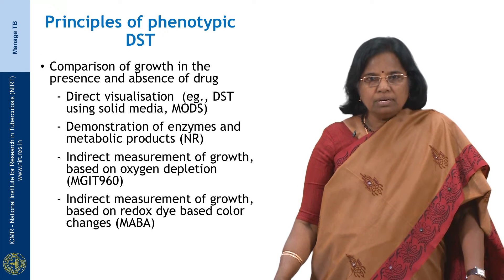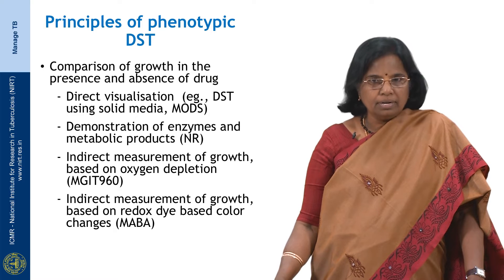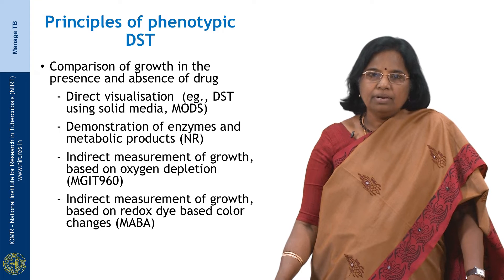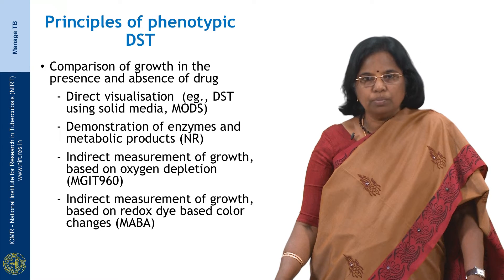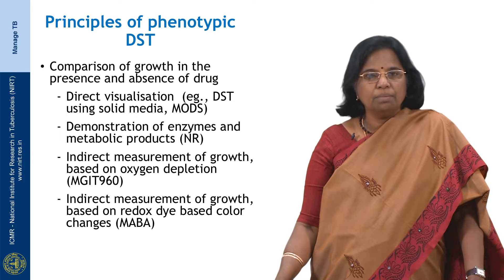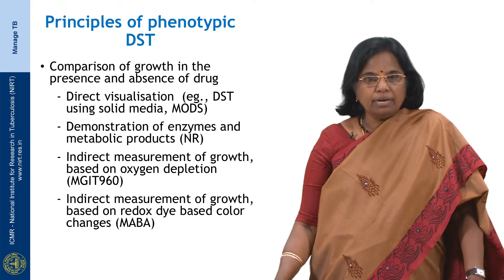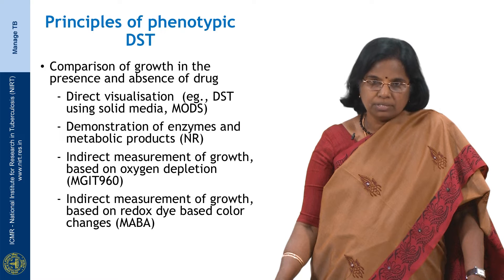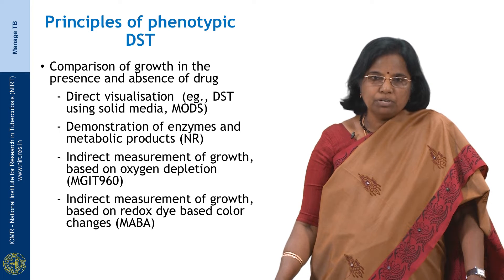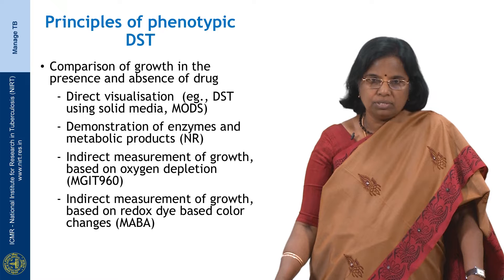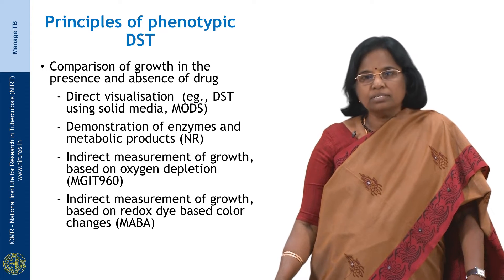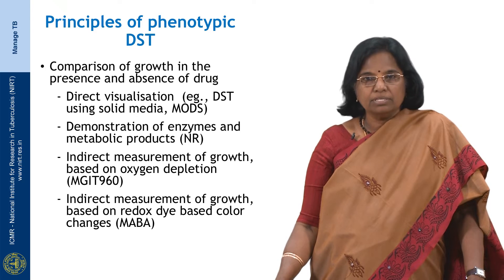Any phenotypic DST compares growth in the presence and absence of the drug, which could be by direct visualization of growth — for example, DST using solid media or the microscopically observed drug susceptibility test — or by demonstration of enzymes and metabolic products, for example the nitrate reductase test, or by indirect measurement of growth based on oxygen depletion in the medium, for example the MGIT 960 DST, or by indirect measurement of growth based on redox dye-based colour changes, for example the microscopic Alamar blue assay. We will be looking at all these tests in detail in the coming slides.